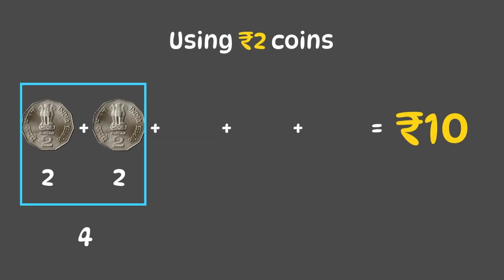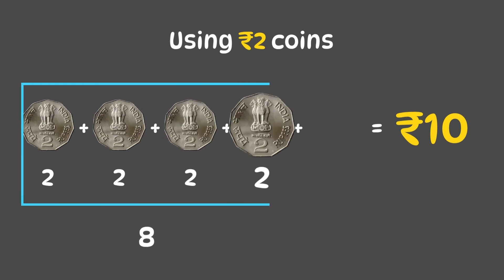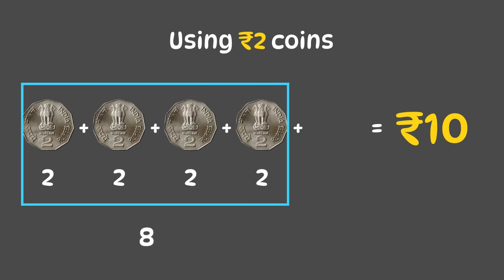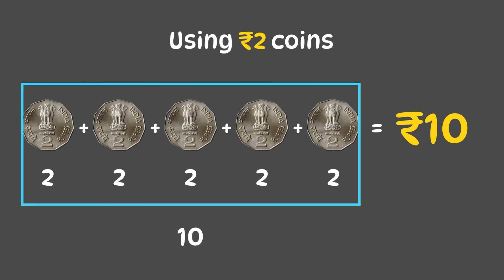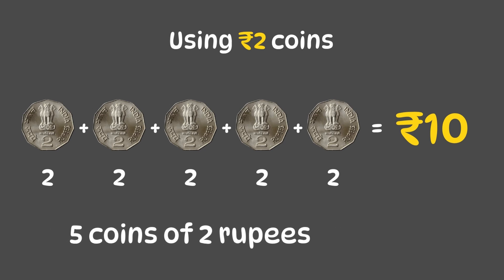2 plus 2 is 4, plus 2 is 6, plus 2 is 8, plus 2 is 10. So Arjun would need 5 coins of 2 rupees.